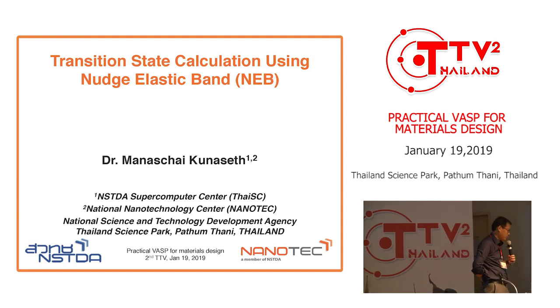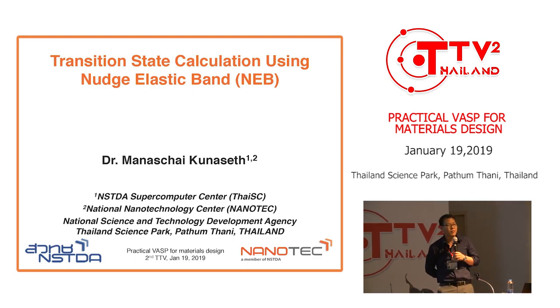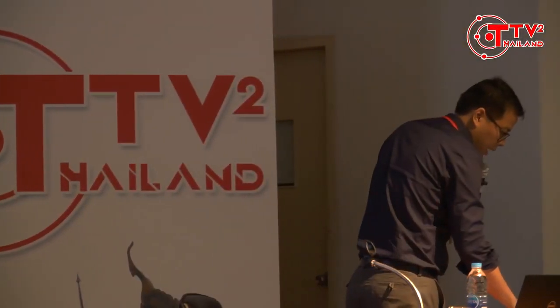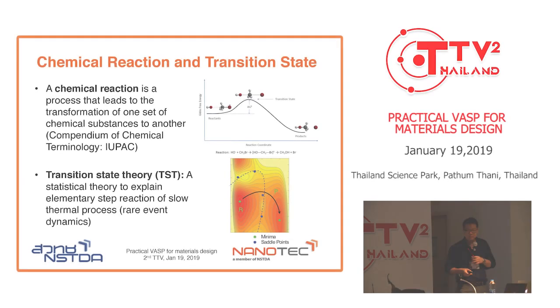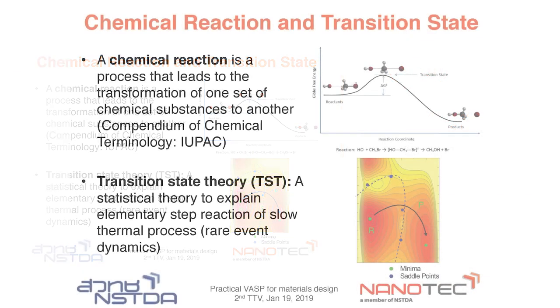We are a little bit ahead of schedule, so we will try to finish this session before going to break so you can have a little bit more time for the last few sessions. In this section I will cover using VASP to compute chemical reactions, calculate transition states, and also the activation energy. The method we use in VASP is called the Nudged Elastic Band.